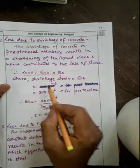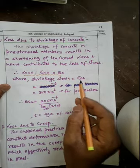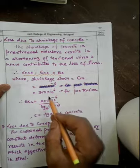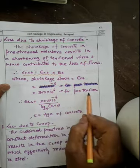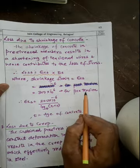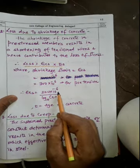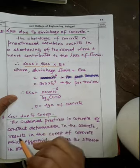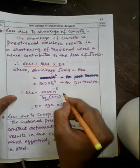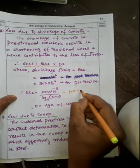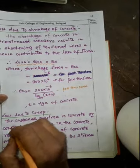Here, ε_cs is the shrinkage strain. For pre-tension members, the value is 300 × 10⁻⁶. For post-tension members, ε_cs = 200 × 10⁻⁶ / log(t + 2), where t is the age of concrete at the time of transfer.